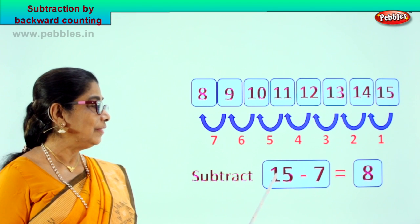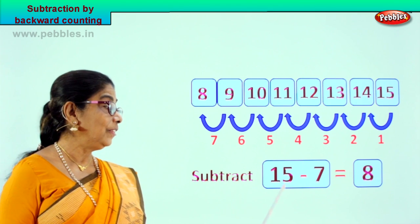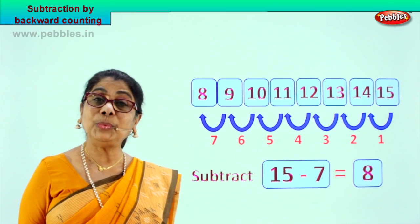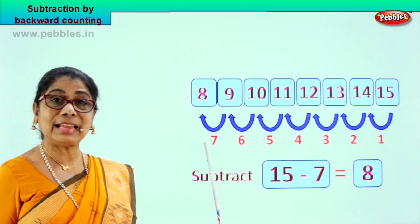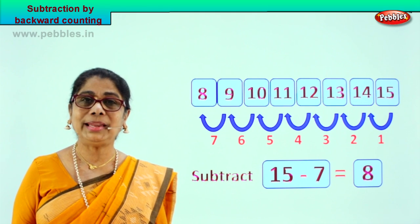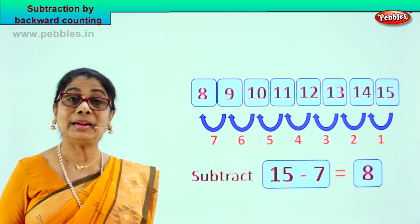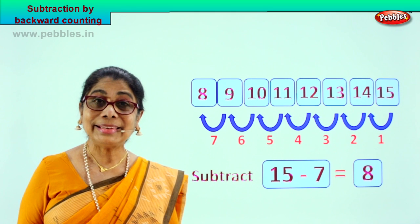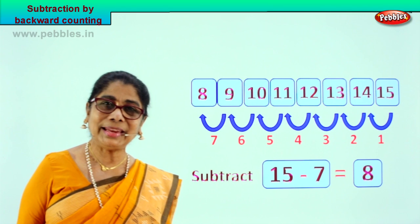Very good. 15 minus 7 is equal to 8. Take away 7 is equal to 8. How did we get the answer 8? From 15 we jumped 7 steps backward and we got the answer. Counting 7 steps backward from 15 gives the answer equal to 8. Did you like the backward counting in subtraction? Shall we take another sum?